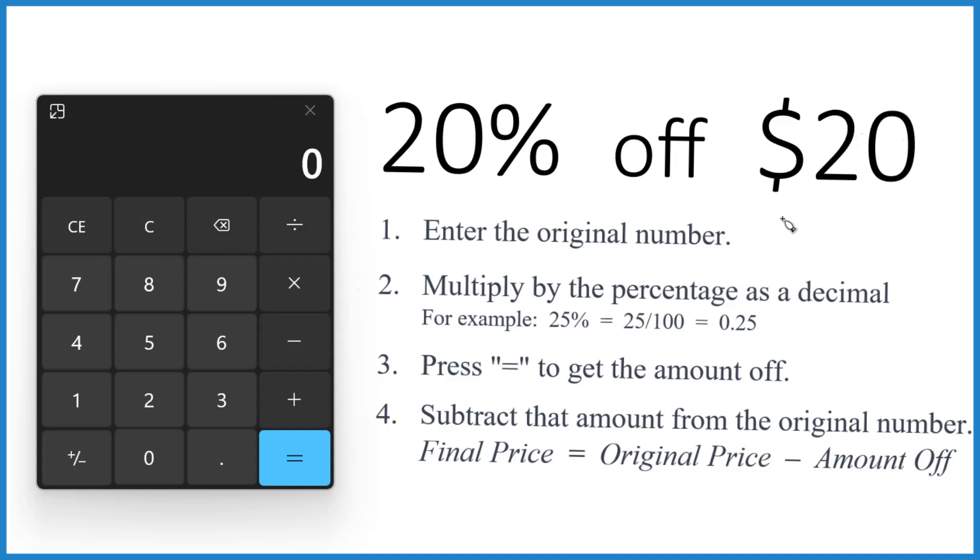So the original number, that's the $20 right here. And then we want to multiply that by 20%, so the 20 divided by 100. So that gives us a decimal and we get .2.